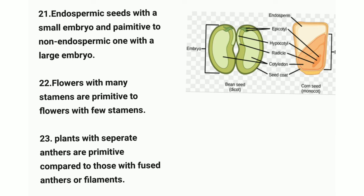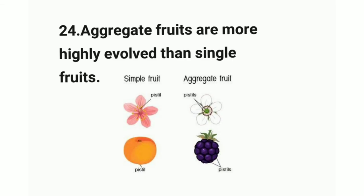Point twenty-two: flowers with many stamens are primitive compared to flowers with few stamens. Point twenty-three: plants with separate anthers are primitive compared to those with fused anthers or filaments. Point twenty-four: aggregate fruits are more highly evolved than single fruits, as seen in the image on screen.